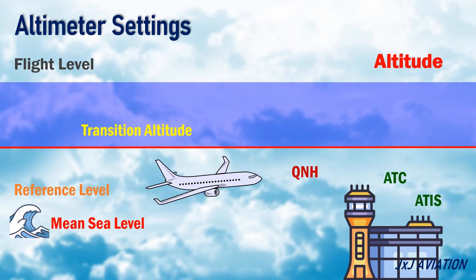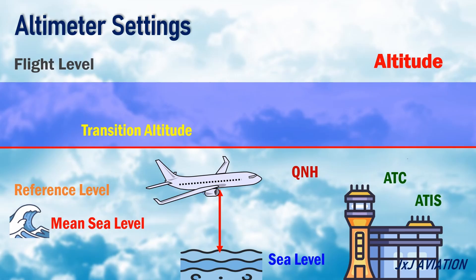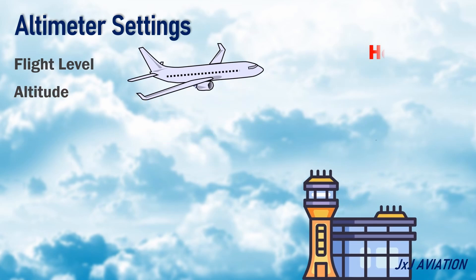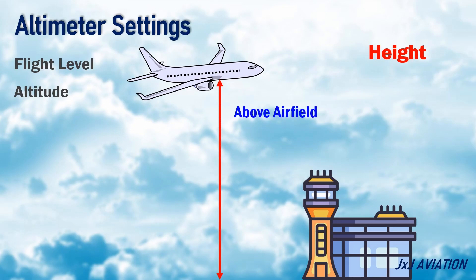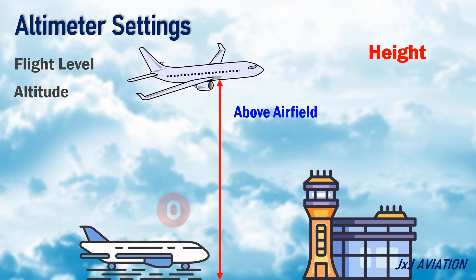The aircraft will now have the altitude readings with reference to mean sea level in the vicinity of the airfield. Height: This altimeter setting provides the height of an aircraft above an airfield. In this setting, when the aircraft is on the airfield, the altimeter should read 0, irrespective of the airfield's altitude. This is also called QFE, and it is only used during approach for landing at a particular airfield.